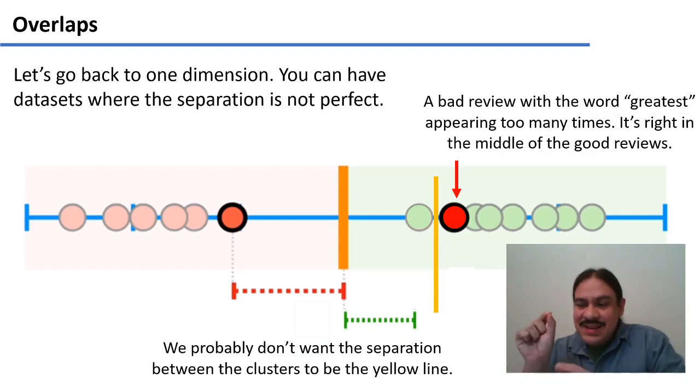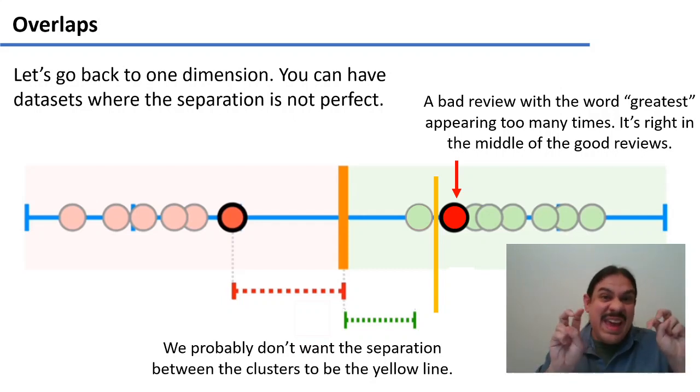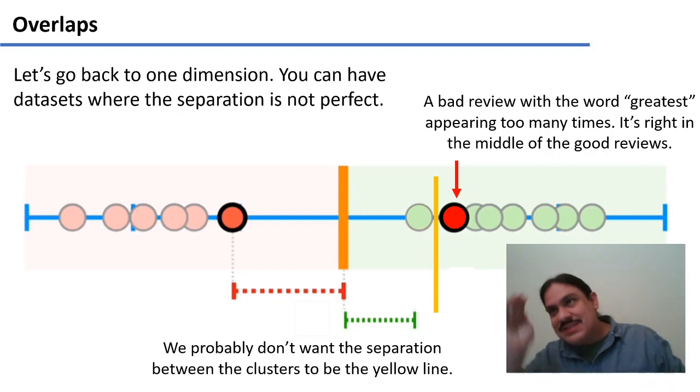So many, in fact, that it resembles the good reviews. So we were saying that the support vector machines are like the edges of each of the clusters. So the edge of the bad examples would be this really strange example that has greatest too many times. Because the edge of the red group is now here on the side of the green documents, and the extreme of the green documents is here, we would have the yellow line as the center, as the line separating the edges of the red group and the green group.